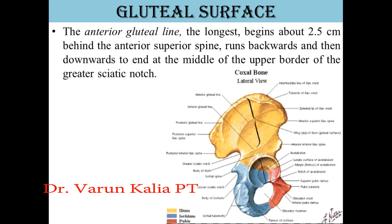The anterior gluteal line is the longest. It begins about 2.5 cm behind the anterior superior iliac spine, runs backward and then downward, to end at the middle of the upper border of the greater sciatic notch. In the diagram, ASIS is visible, and from 2.5 cm behind it this line goes backward and downward, ending at the upper border of the greater sciatic notch.